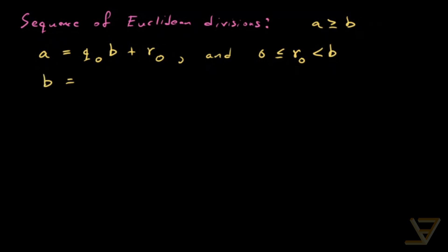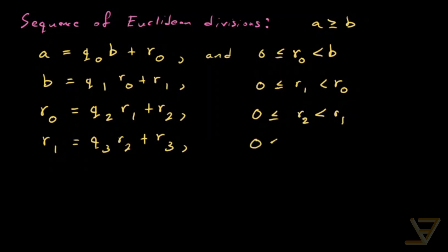Then we get b is equal to q1 r0 plus r1 and we get 0 is less than or equal to r1 and less than the previous remainder r0. Then we do r0 is equal to q2, another quotient, r1 the divisor, the new divisor plus r2, the new remainder. And we have r2 is less than r1. Let's do one more. We get r1 is equal to q3 r2 plus r3. And we have r3 is greater than or equal to 0 and less than r2.